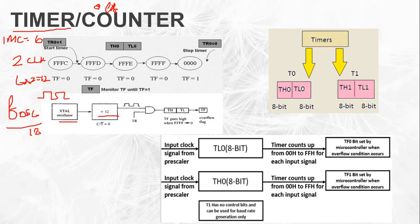TR0 is set equal to 1 to start the timer, and TR0 is set equal to 0 to stop it. Counting from 0 to 255 gives approximately 256 counts. If you want to set 56 counts, you reset to 0.